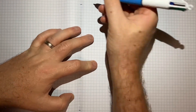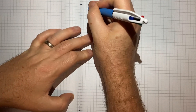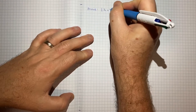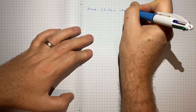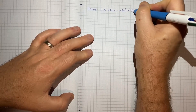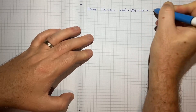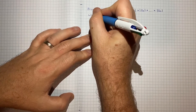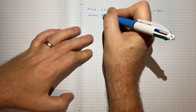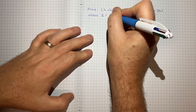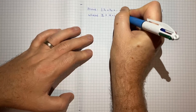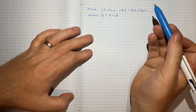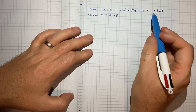To start, I'll write out what we're asked to prove: the modulus of z1 times z2 times all the way up to zn is equal to the modulus of z1 times the modulus of z2 times all the way up to the modulus of zn, where z is in the form alpha plus i·beta - a real number plus the complex number i times some beta.